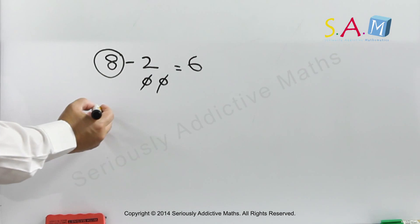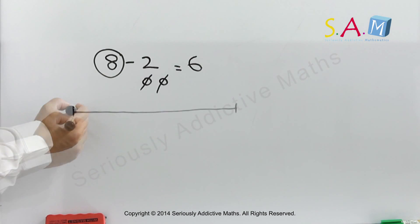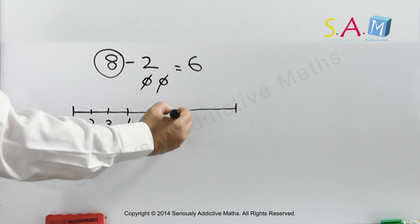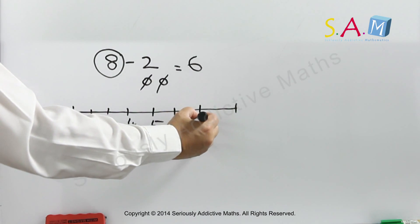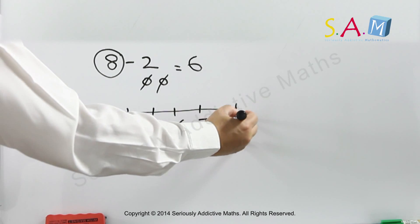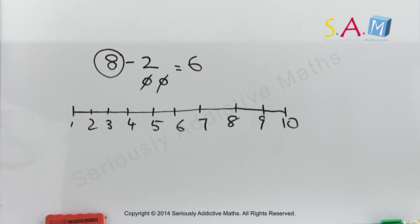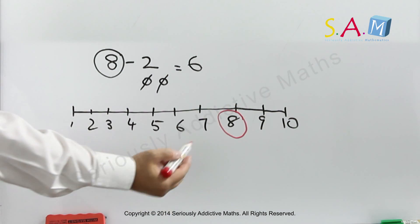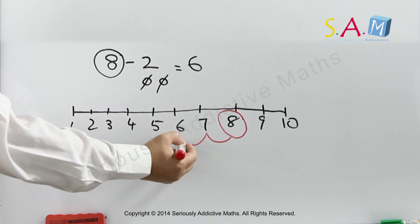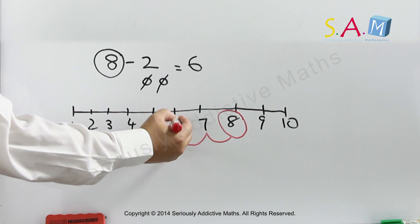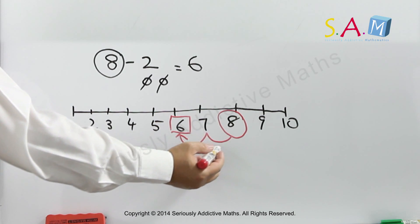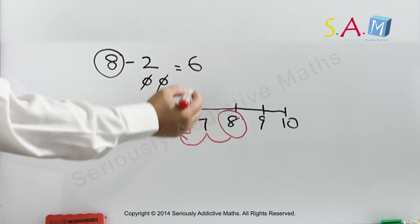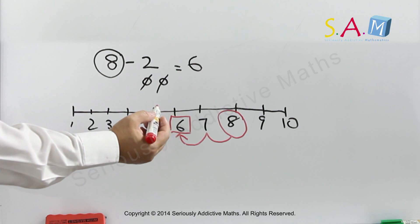I'm going to show this on the number line: 1, 2, 3, 4, 5, 6, 7, 8, 9, 10. So I have 8, count on backwards: 7, 6. So 8 take away 2, count on backwards, I get the answer as 6.